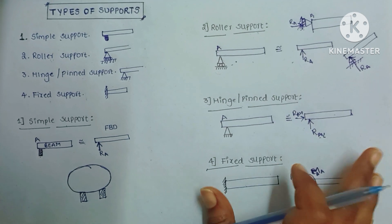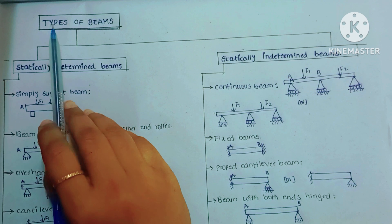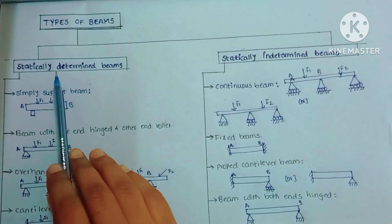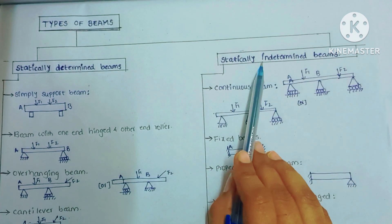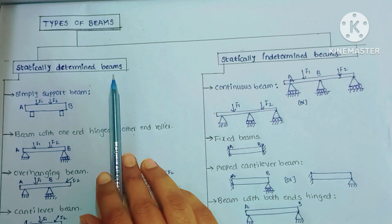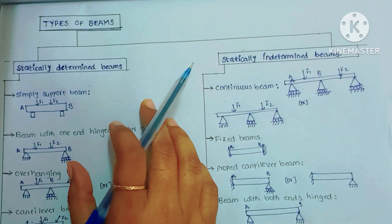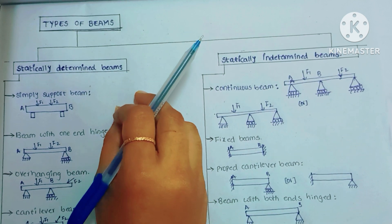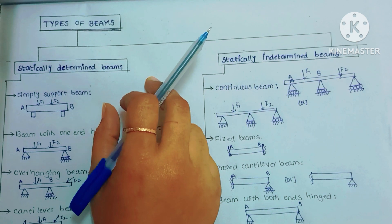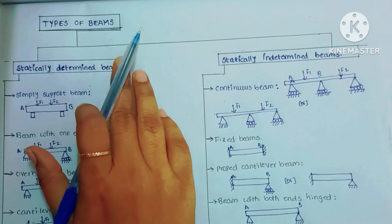Next we will see types of beams. There are two types: statically determined beams and statically indetermined beams. Statically determined beams are beams whose forces can be calculated using only static equilibrium equations.